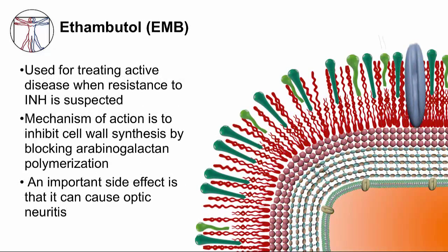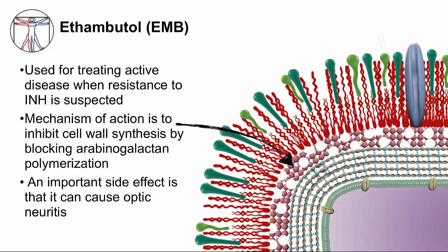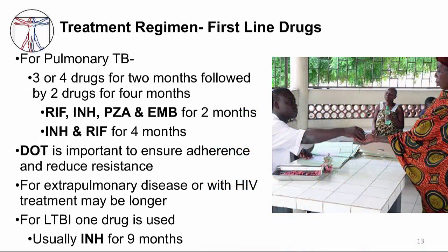Ethambutol is added to isoniazid, rifampin, and pyrazinamide in treating active TB disease when there is a suspicion of isoniazid resistance. Its mechanism of action is to inhibit cell wall synthesis by blocking the polymerization of arabinogalactan, that sugar layer. An important side effect is that it can cause optic neuritis. The first-line treatment regimen for active pulmonary TB disease is rifampin, isoniazid, pyrazinamide, and sometimes ethambutol for two months, then continuing isoniazid and rifampin for four more months, for a total of six months.